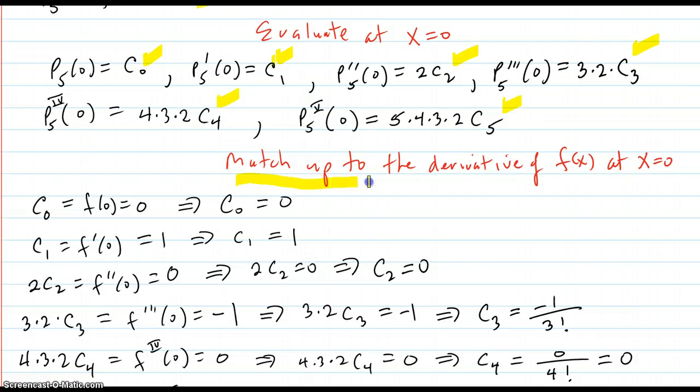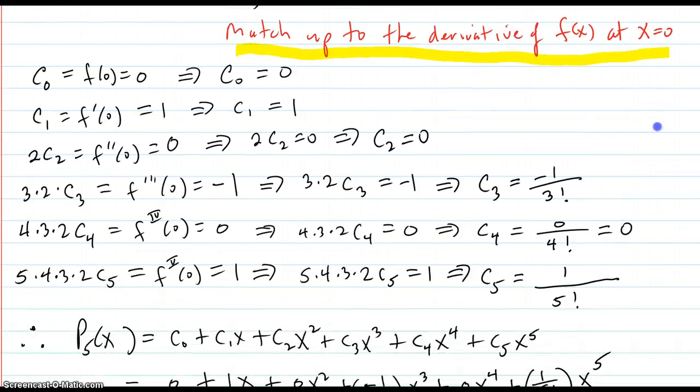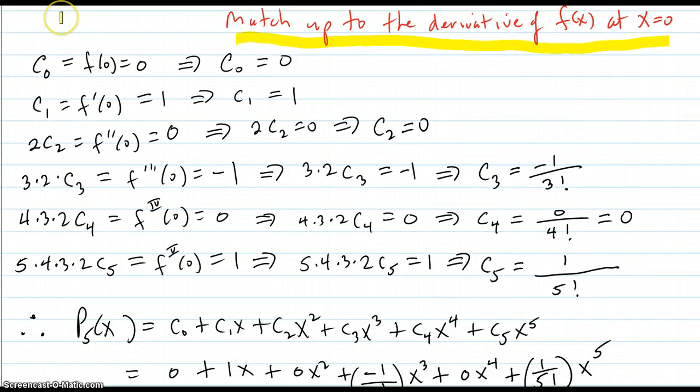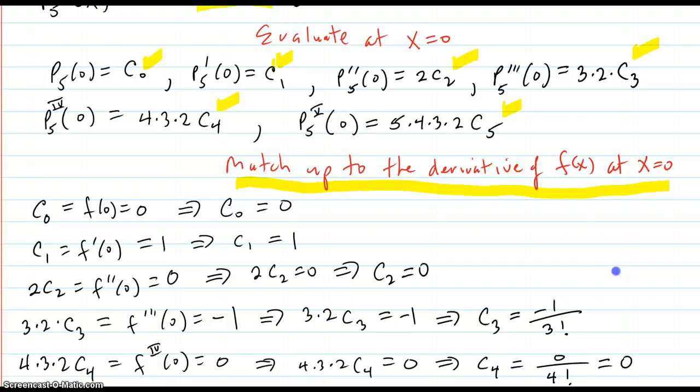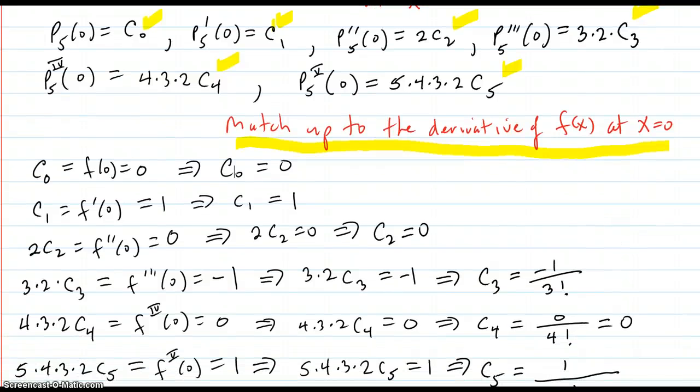Then match up those values to the derivative values of f of x at x equals zero. So let's see if we can see them both on the same. So c zero, that's this, has to match up with f of zero, which happens to be zero, sine of zero, zero. So that implies c zero equals zero.